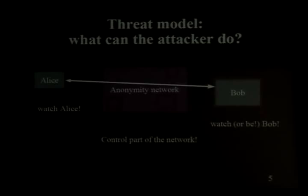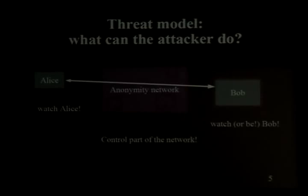If the adversary is in all of these positions, we're screwed — we can't protect against that. A lot of crypto people use the phrase 'threat model' to define the precisely shaped adversary that provably cannot defeat their system. In our case, our threat model is the actual adversary we expect to see in practice, and I'll explain later why we can't defeat somebody watching all of these different places.